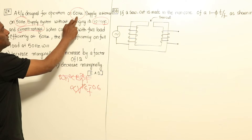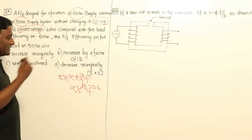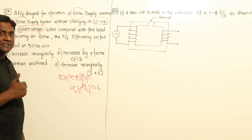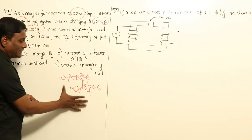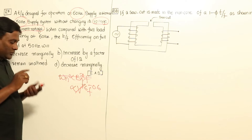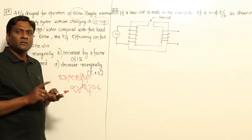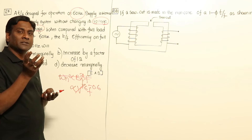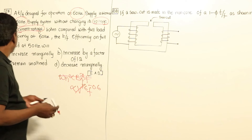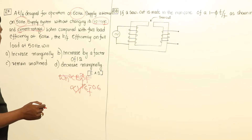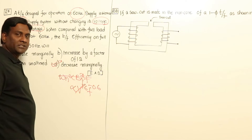The 60-hertz designed system is being operated at 50-hertz, meaning frequency is reduced. If frequency is reduced, hysteresis losses have to increase by this relation. So hysteresis losses increase, eddy current losses will be same, and copper loss also will be same. So total losses are going to increase, and therefore efficiency is going to reduce. The answer is 'decrease marginally' — efficiency has to reduce.